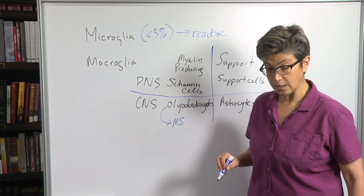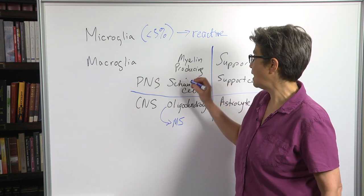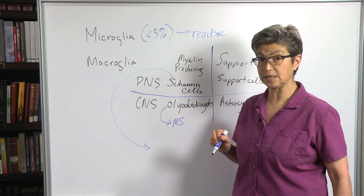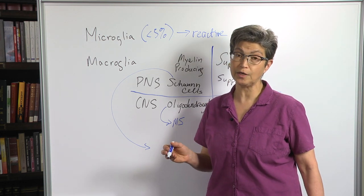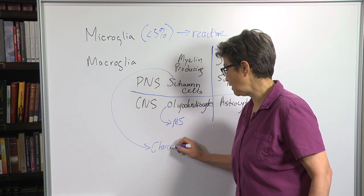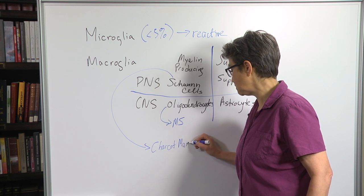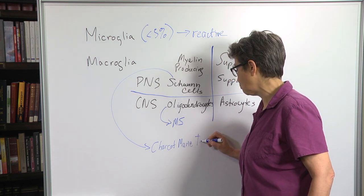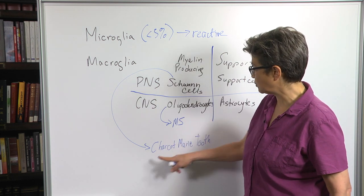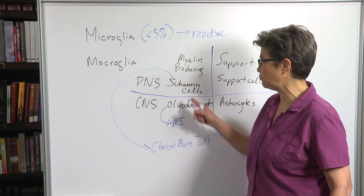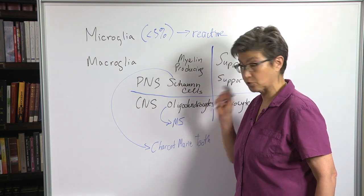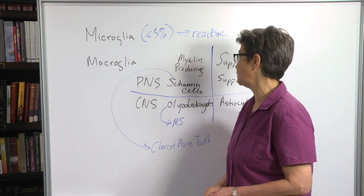Which is typically abbreviated as MS. And the most common type of demyelinating disease in the periphery is a heterogeneous group of inherited demyelinating disease called Charcot-Marie-Tooth diseases. And so, in CMT or Charcot-Marie-Tooth, only peripheral axons are demyelinated, and in multiple sclerosis, only central axons are demyelinated.